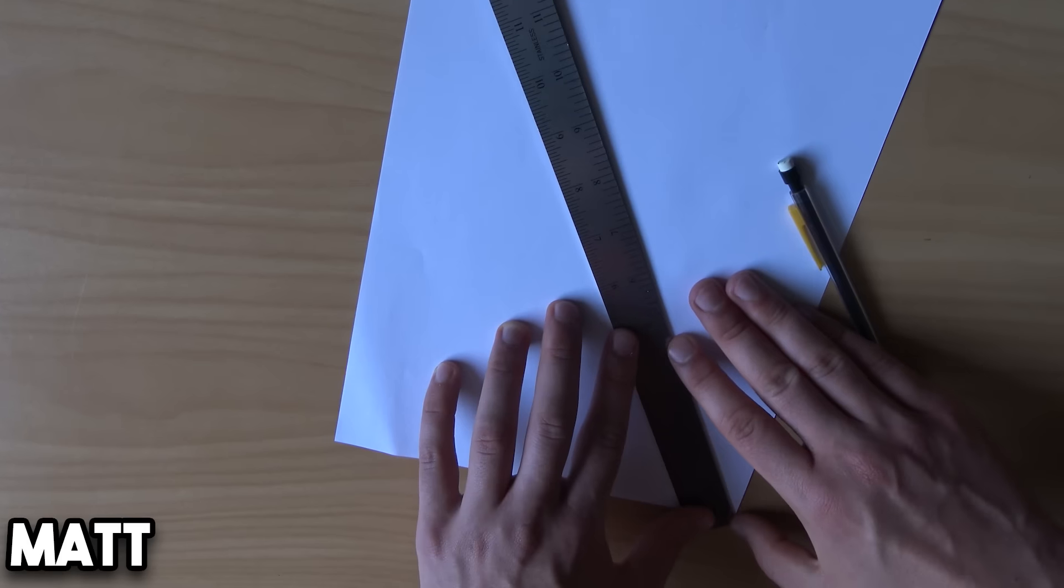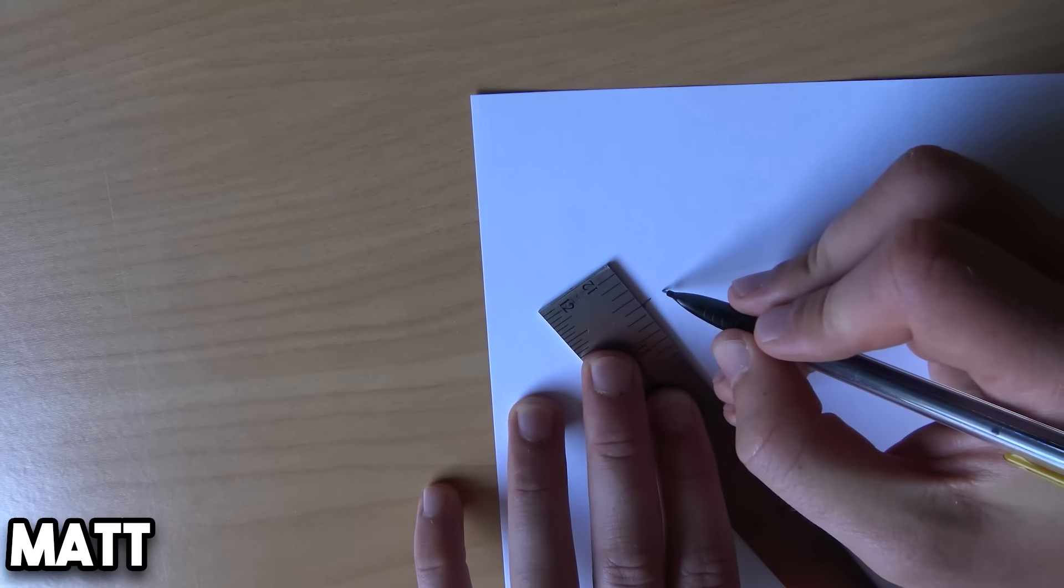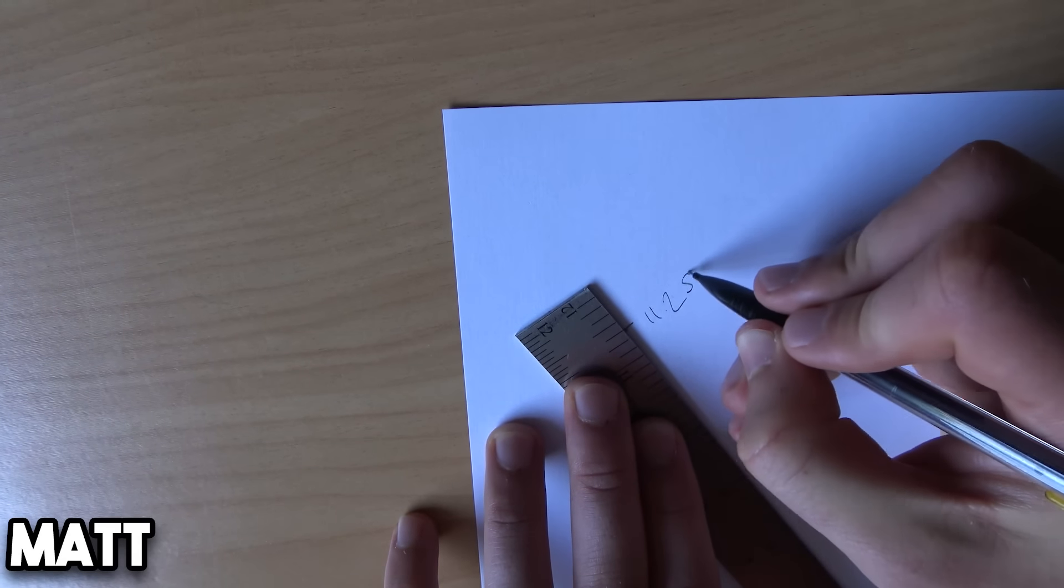What your helper can now do is place the end of the tape measure against the wall next to your foot and then line it up with the highest point. Make a mark of this point and note down the length in inches.